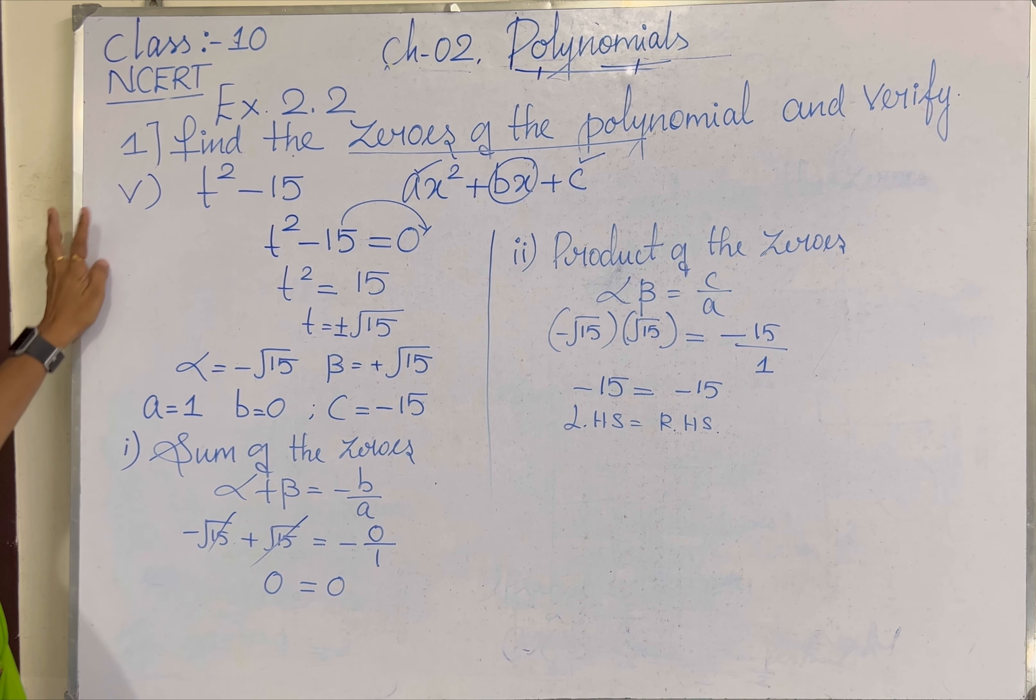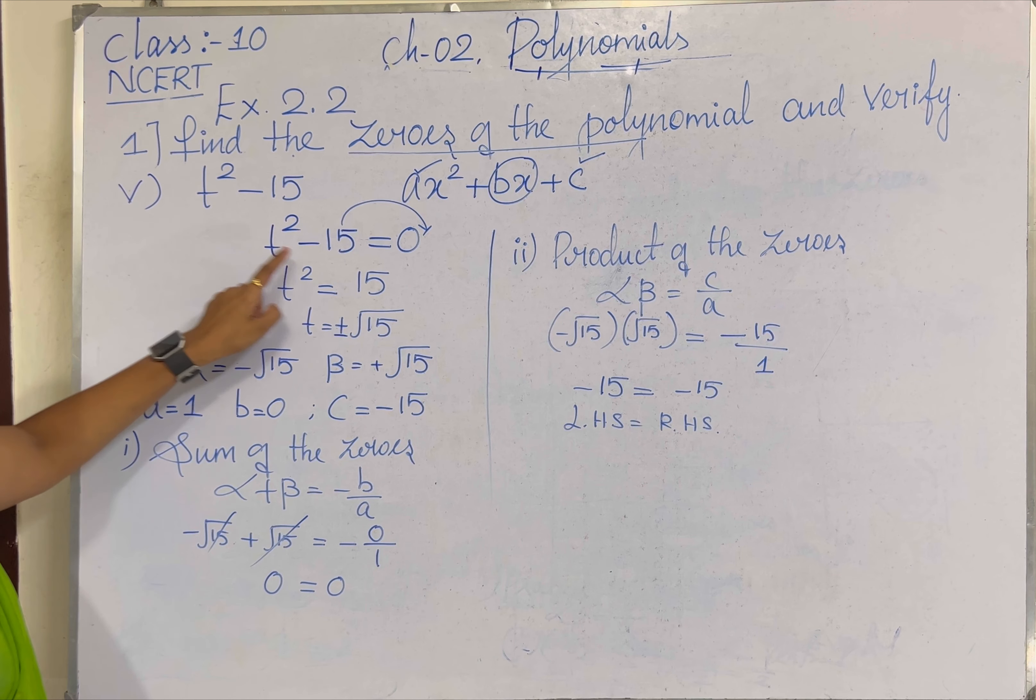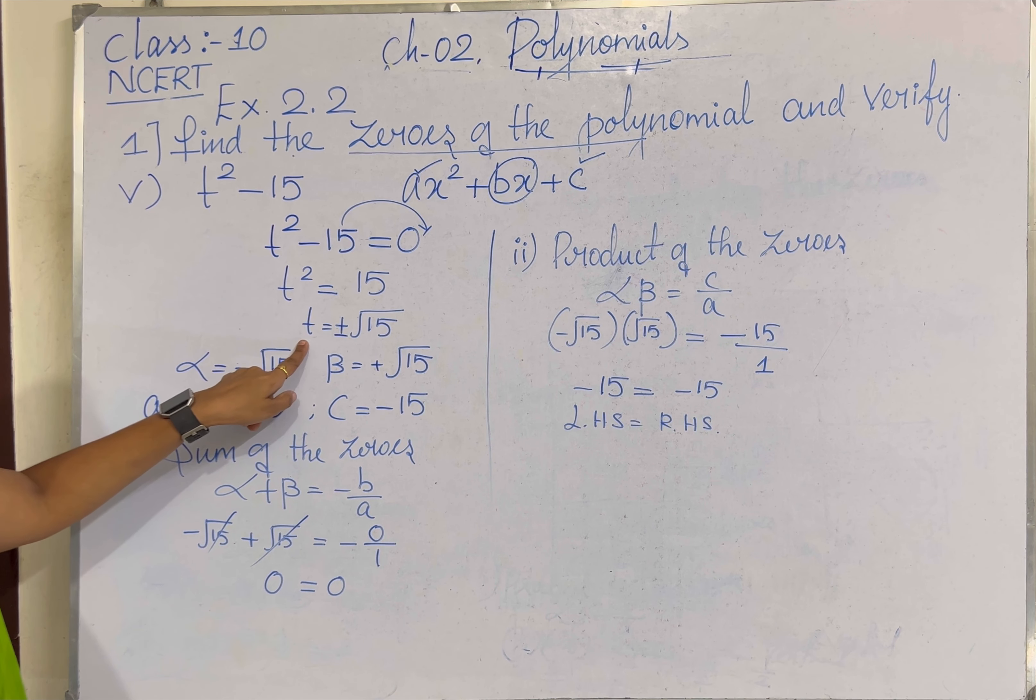Let me explain the problem again. Subdivision number 5, T square minus 15. The polynomial expression has the first term and the last term. Here we don't find T term. So I can directly equate them to 0. Finding the value of T, T equal to plus or minus root 15.